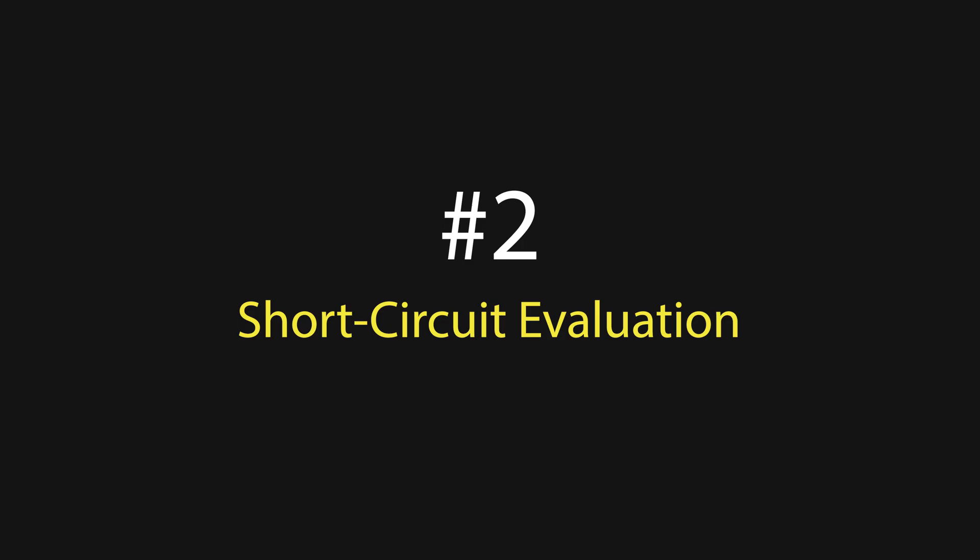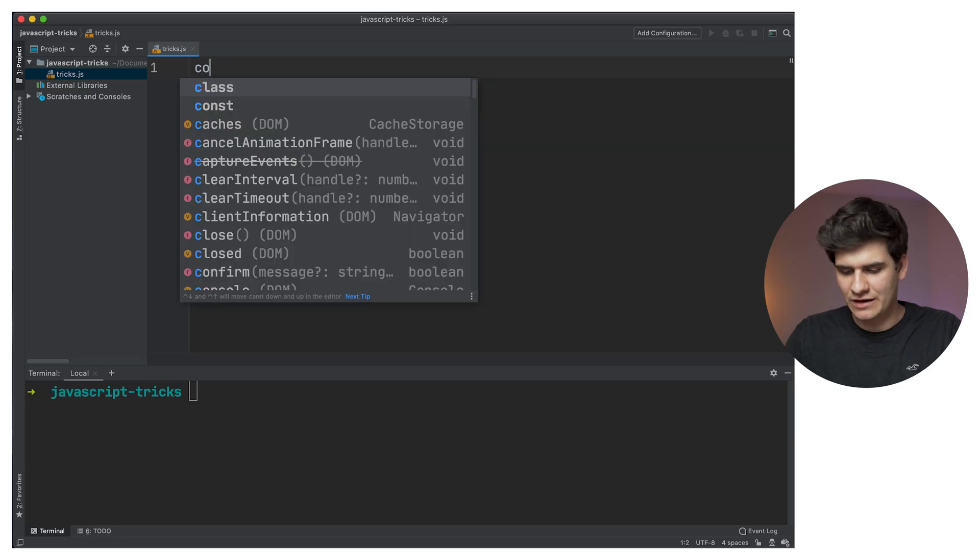On to trick number two. This one is a trick I use all the time when I'm coding in JavaScript. It's basically like an if-else statement, but it allows you to keep it very short and in one line. This trick is called short circuit evaluation.